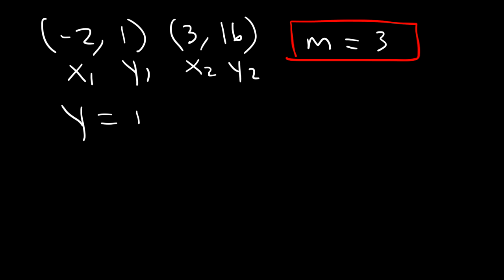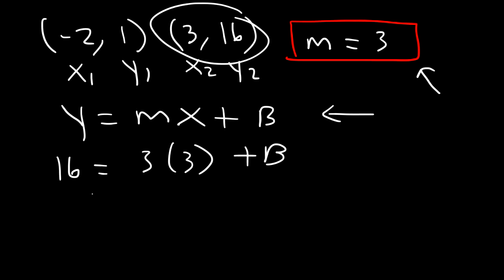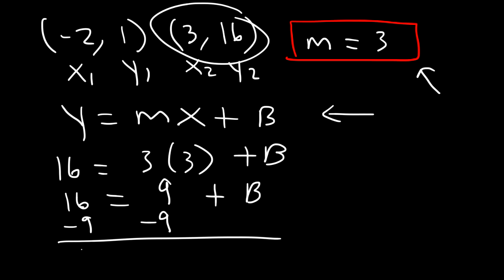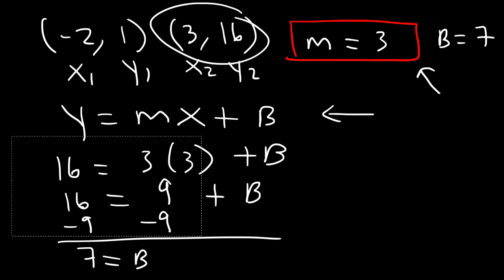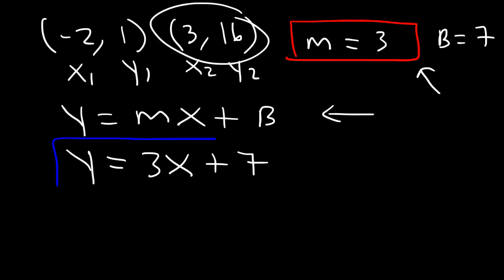Now let's use the slope-intercept formula y = mx + b. Choosing the second point (3, 16): y = 16, m = 3, x = 3. So 16 = 3(3) + b → 16 = 9 + b → b = 7. Once you have b and m, write the equation in slope-intercept form. Replacing m and b: the answer is y = 3x + 7.